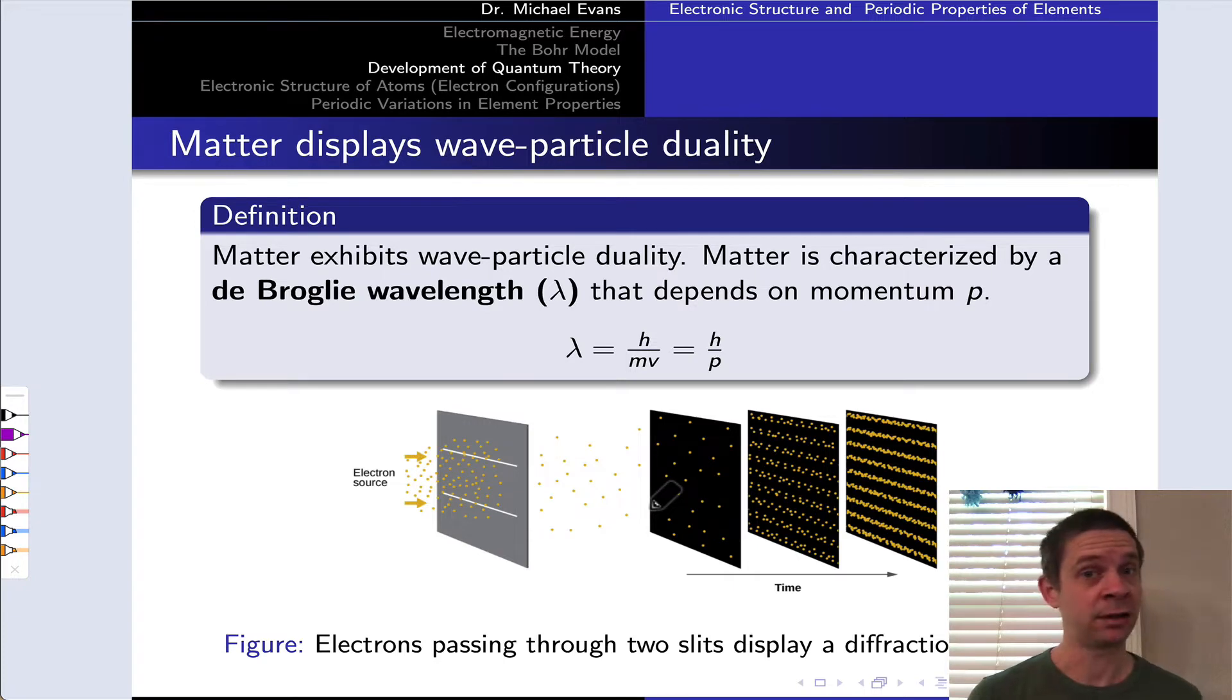then maybe matter, which is classically particle-like, can have wave-like properties. And how do we describe those wave-like properties of matter as a quantum phenomenon?